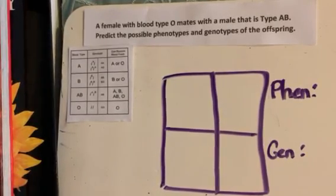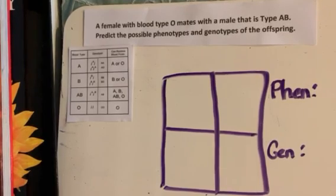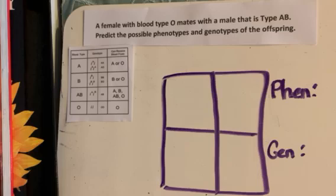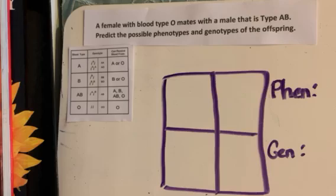The last thing we're going to review is how to do Punnett squares with blood typing problems. Blood types are interesting because there are actually three different alleles that code for blood: the A allele, the B allele, and the O recessive allele. A and B are both dominant and O is recessive, and you can get different combinations of these which determine your blood type.